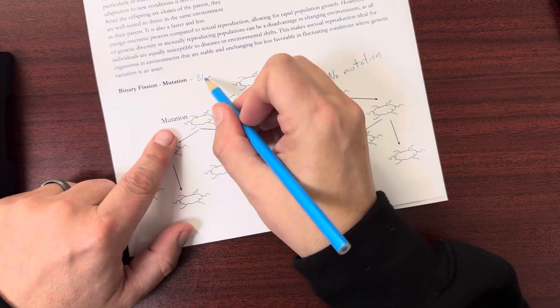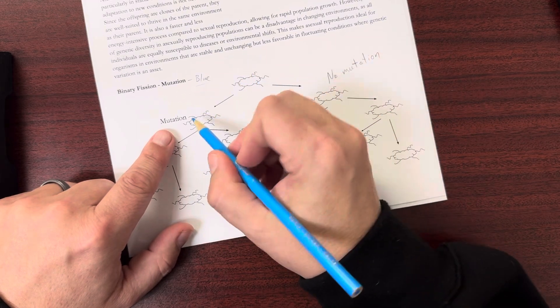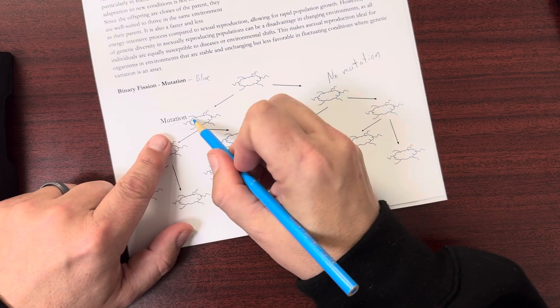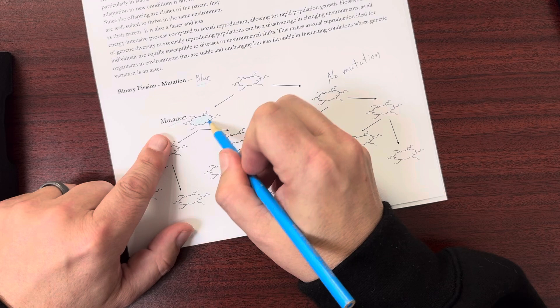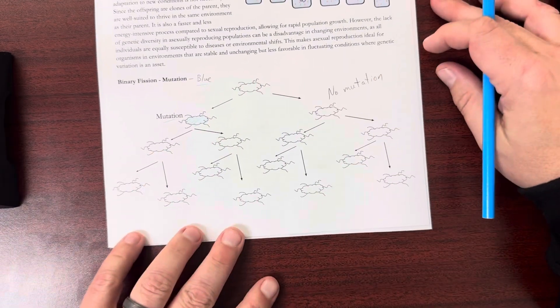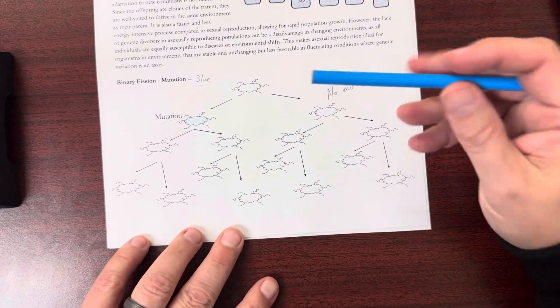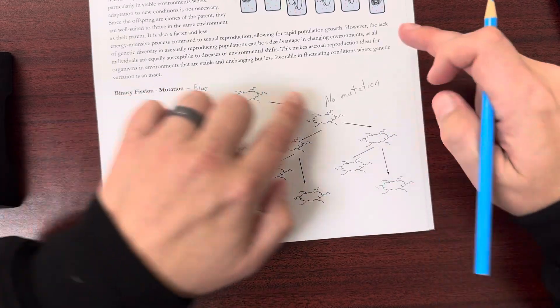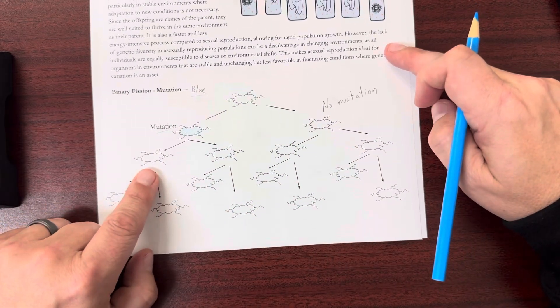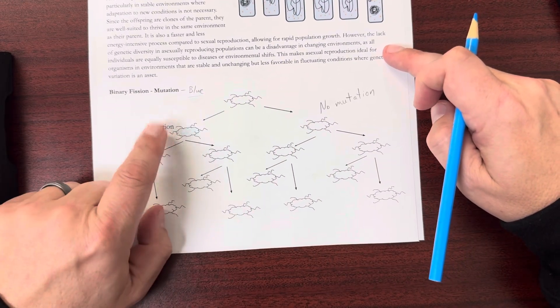So I want to color in the bacteria that are going to have this mutation now. So I'm going to color that one in blue. Well, I want you to color in the rest of the bacteria that are going to have this same mutation.